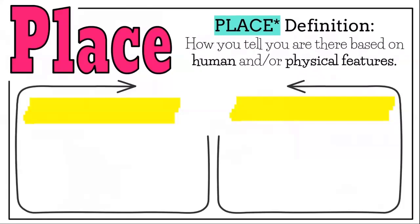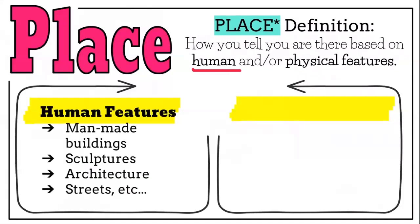The second theme is place — how you tell where you are based on human and/or physical characteristics. A human feature is something that is man-made: buildings, sculptures, architecture, streets. For example, if you saw the Colosseum, which is man-made, you'd say, 'Oh, that's the Colosseum — I know I'm in Rome.'